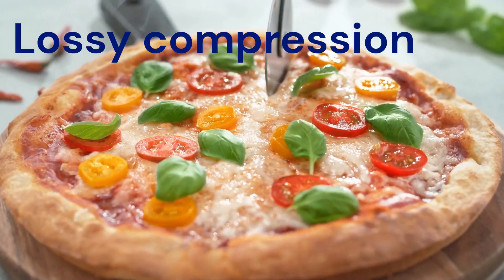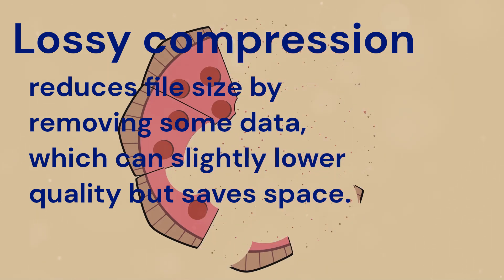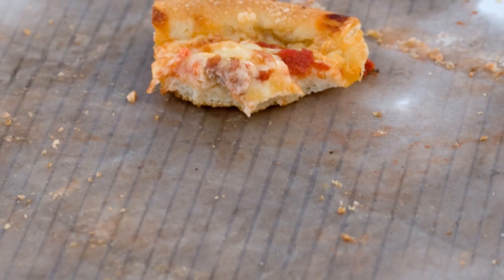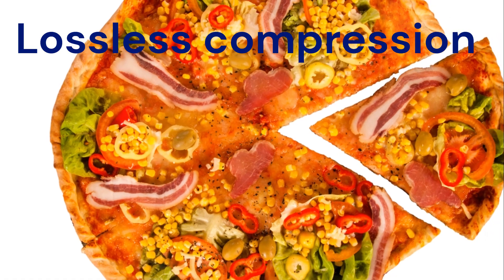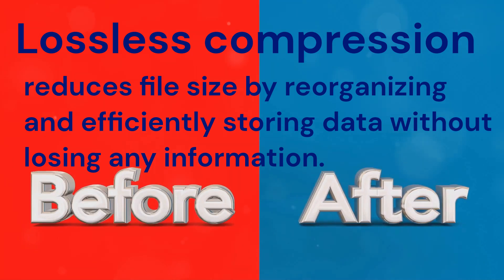Let's start with lossy compression. Imagine making a pizza smaller by removing some toppings — you still have pizza, but it's missing some details. Lossy compression works similarly: it shrinks files by strategically removing non-essential data, leaving you with a smaller file. Now picture making a pizza smaller by carefully folding it — all the toppings are still there, just rearranged. That's lossless compression: it shrinks files without discarding any information. Lossy compression is great for files where a little quality loss is acceptable, like images or videos.